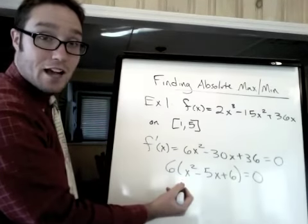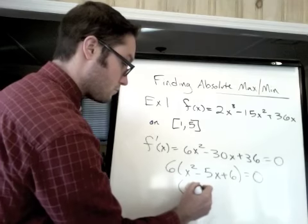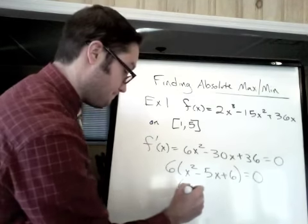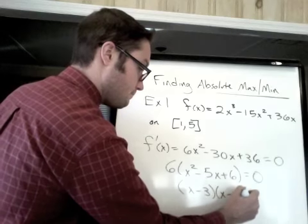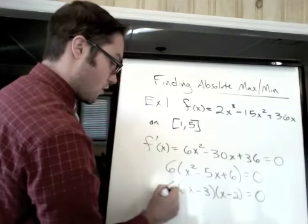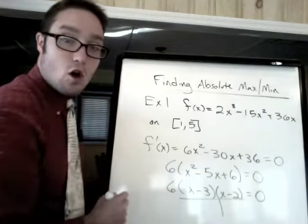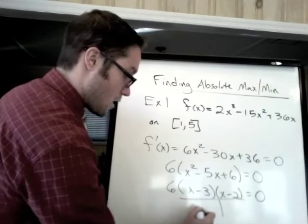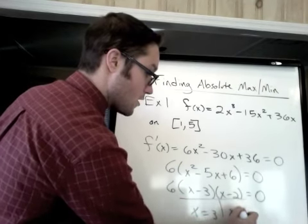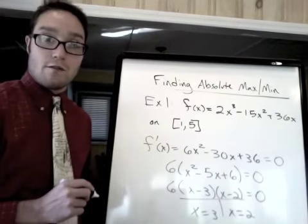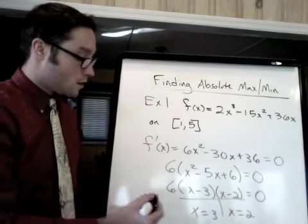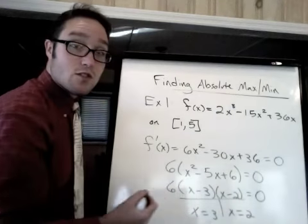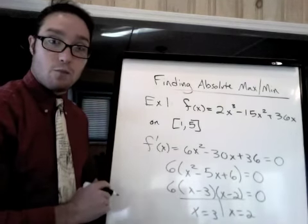And then I can hopefully factor this quadratic. Well, hopefully you can. That looks good. So give it the old t bar. x equals 3, x equals 2. Those are the zeros of the derivative, meaning there's a horizontal tangent line, which tells you x equals 3 and x equals 2 are where the stationary points are.